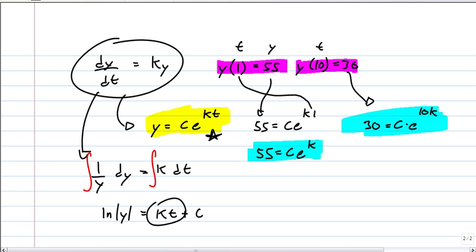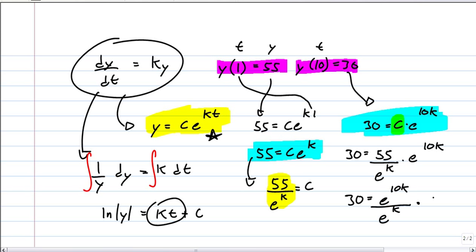I'm going to go ahead and solve, let's solve this first one here for c. So this would be 55 over e to the k equals c. And I'll take that, that's c, and I'll substitute it into the second equation right there. So then I'll have one equation, and I'll only have k's in it.